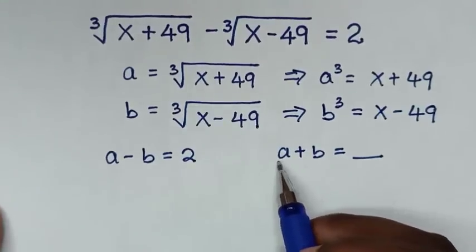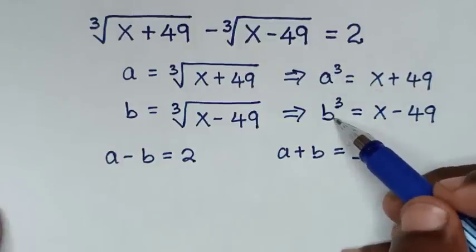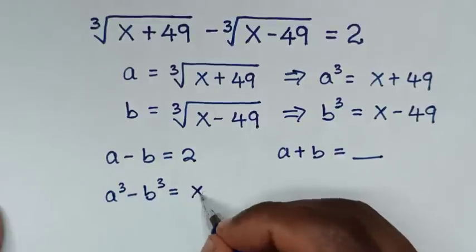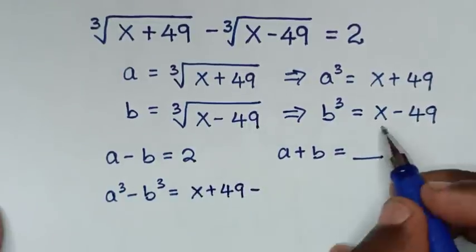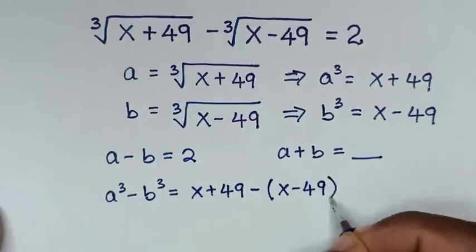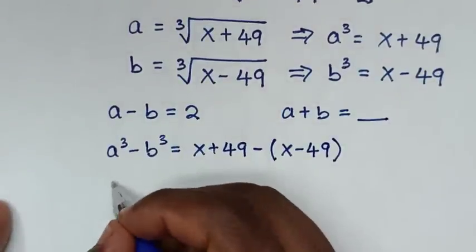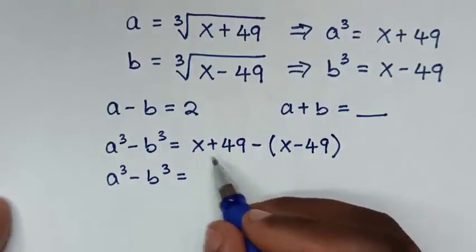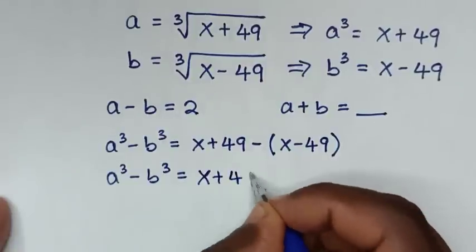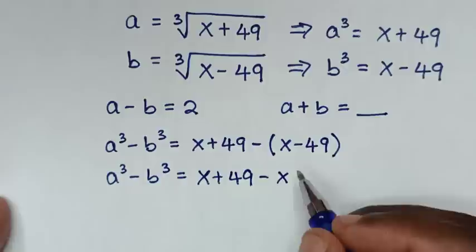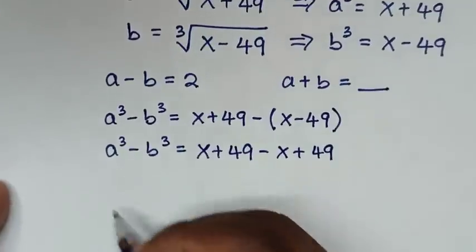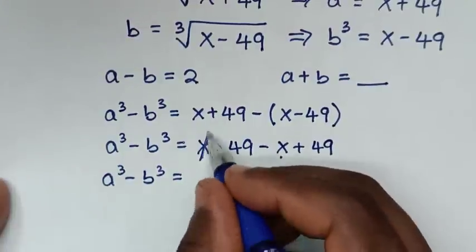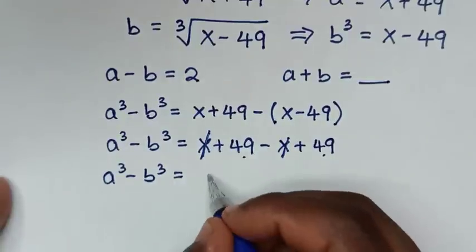To find the value of a plus b, we start from a³ minus b³. So a³ minus b³ equals (x + 49) minus (x - 49). Opening the bracket: x plus 49 minus x plus 49. The x terms cancel, and 49 plus 49 is 98. So a³ minus b³ equals 98.